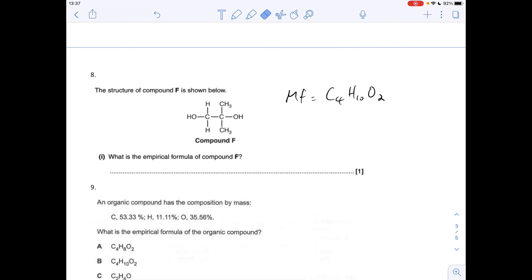Question 8, the molecular formula is C4H10O2, so that's the actual number of atoms of each element in the compound. Can that be simplified to a simpler ratio, whole number ratio of numbers? Yes, it can, C2H5O.